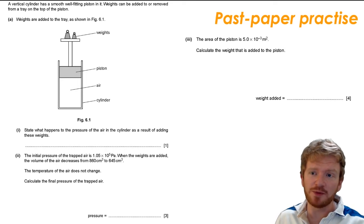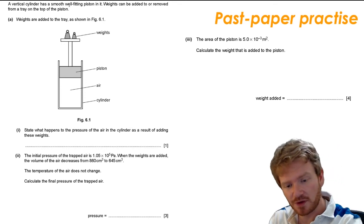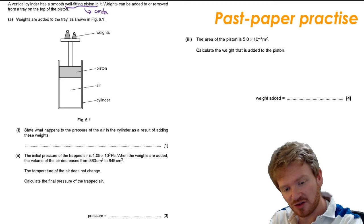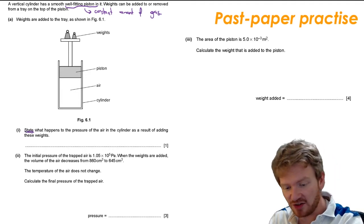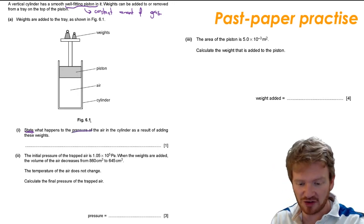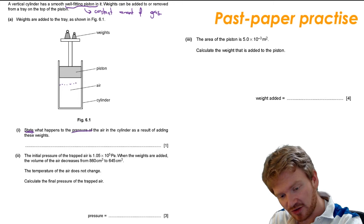Let's think about an example of where we can use this. This is a past paper question from a few years ago: a vertical cylinder has a smooth, well-fitting piston in it. Weights can be added or removed from a tray at the top of the piston. The well-fitting piston means there is a constant amount of gas — no particles can get in or out. As I add the weights, the piston will drop down, so my volume gets smaller. As I said earlier, if volume goes down, pressure goes up — so the pressure will increase.